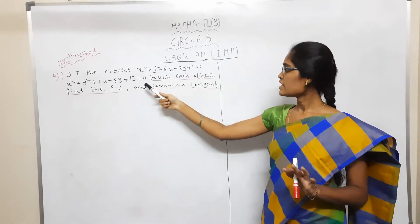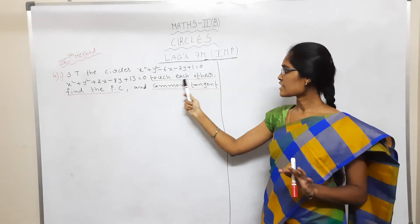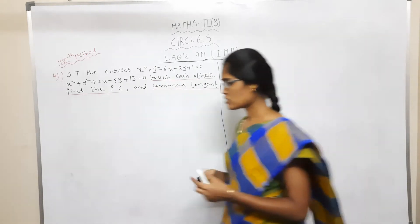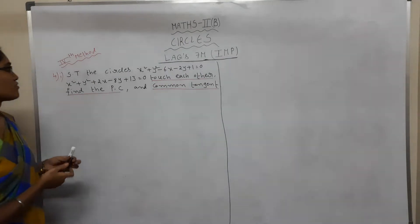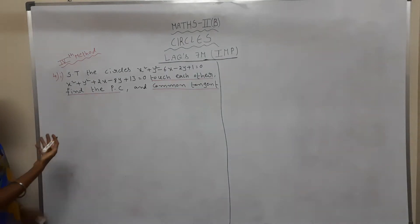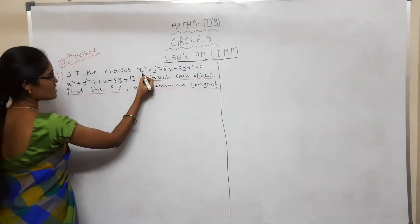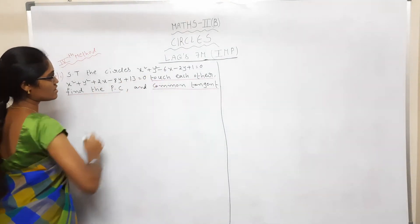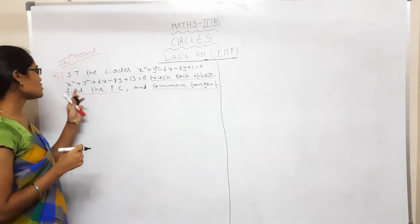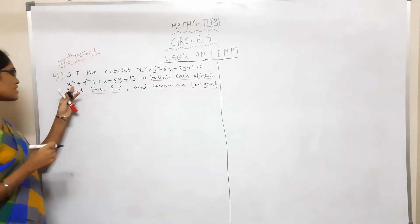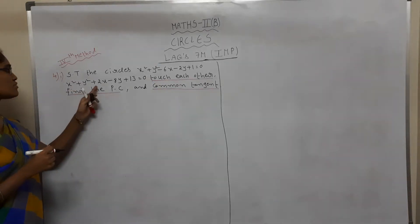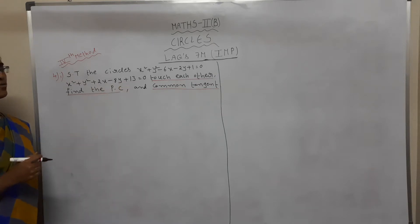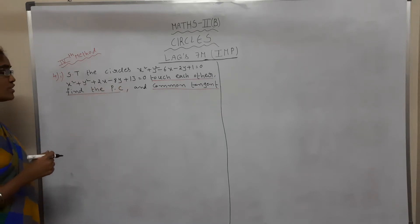The question: show that the circles touch each other at a point of contact with a common tangent. The given circles are: first circle — x² + y² − 6x − 2y + 1 = 0, and second circle — x² + y² + 2x − 8y + 13 = 0.